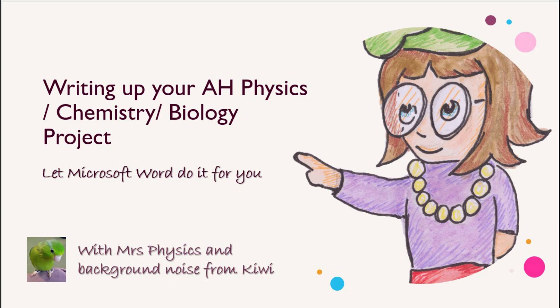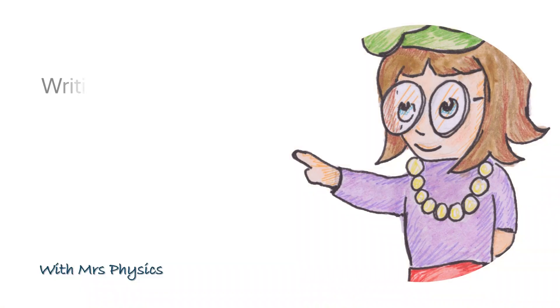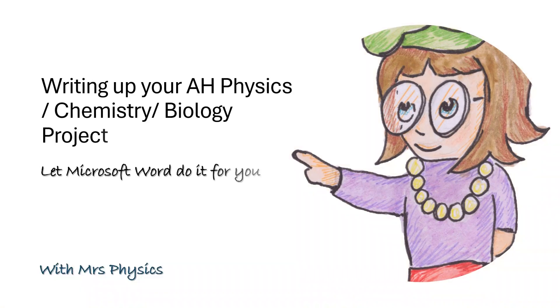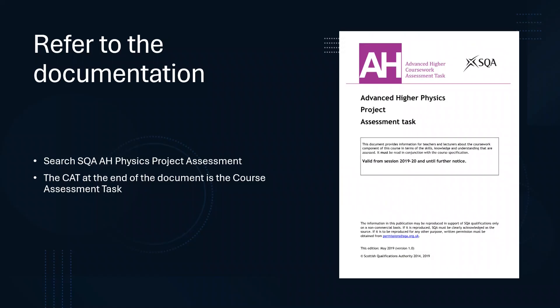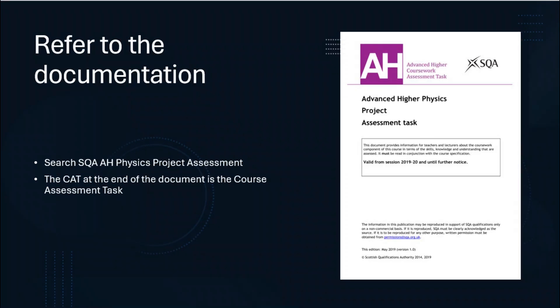Hello team. Today I want to show you how to set up writing your Advanced Higher Physics project. This video might also be useful for other sciences, so please pass it on. Before starting out, make sure that you've downloaded the Advanced Higher Project Course Assessment Task (CAT), which is the full marking instructions. Find it online and make sure that it's the most up-to-date version. I suggest you read it well in advance of starting your project.